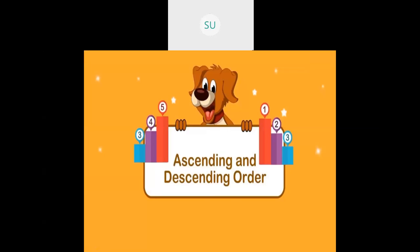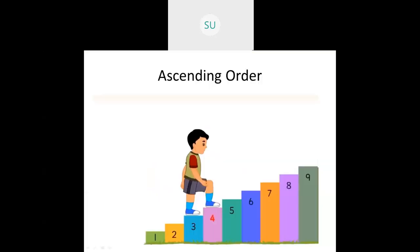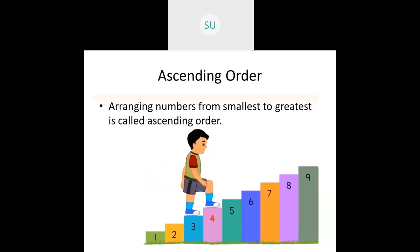So this was between, after, and before. Now let's see ascending and descending order. This boy is climbing up stairs. He will climb 1, then 2, then 3, 4, 5, 6, 7, 8, and 9, finally reaching 9. He is going from 1 to 9, so numbers are increasing. Arranging numbers from the smallest to greatest is called ascending order — smallest is 1 and greatest is 9.